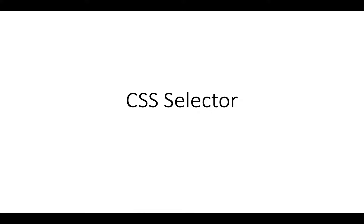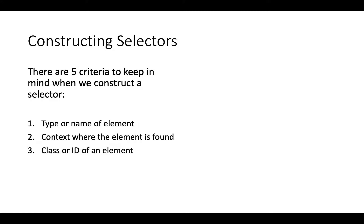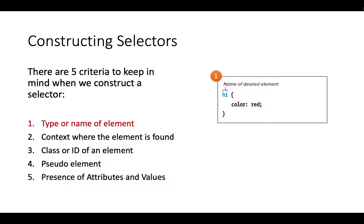Here's a simple example. It specifies the formatting rules for H1, the level 1 heading. H1 itself is the selector. Within the curly brackets, those are the rules you apply — for example, making the color red, which makes the text color of the H1 red. That's probably the simplest one; there's nothing really complex to talk about there.